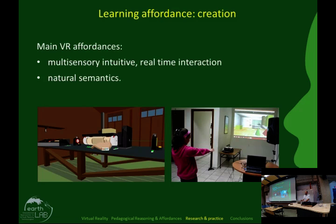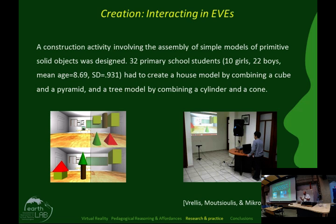The first learning affordance is creation. The main VR affordances it is based on are multi-sensory, intuitive, real-time interaction and natural semantics. For example, here we can see physics students working on a virtual laser, or primary school students building primitive objects like houses and trees using their hands. This was a brief study on the interaction of children with virtual environments.